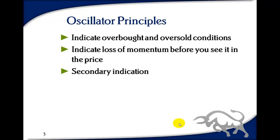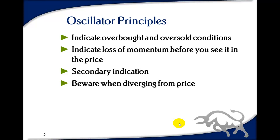An important point: oscillators really are secondary indicators. They are not prime trading factors — they have to be supported by looking at other things on the chart. Trend analysis is where you start. You don't start by looking at an oscillator and saying it's overbought or oversold and jump into a trade. You start by looking at the chart and the prices, seeing if there's a trend that supports that idea.